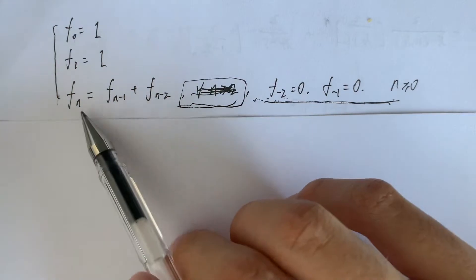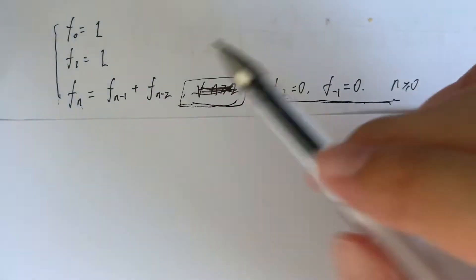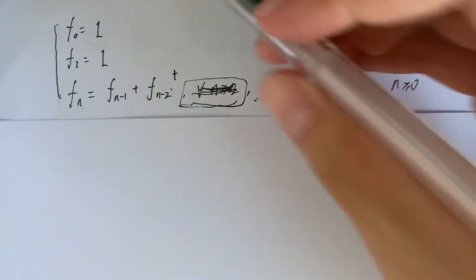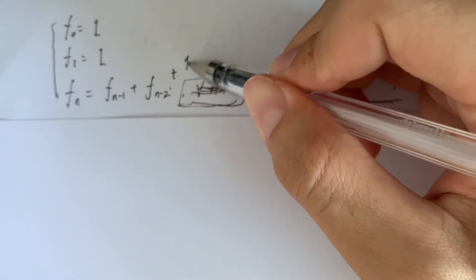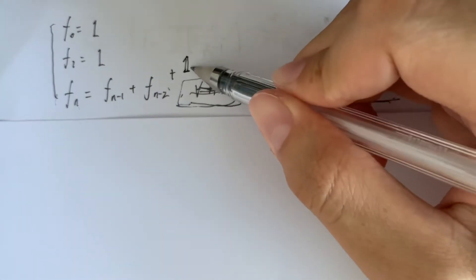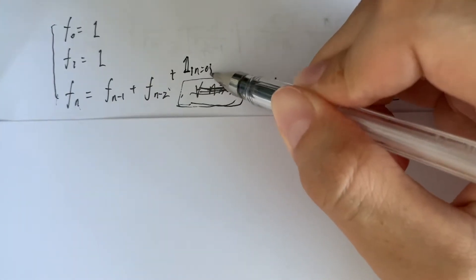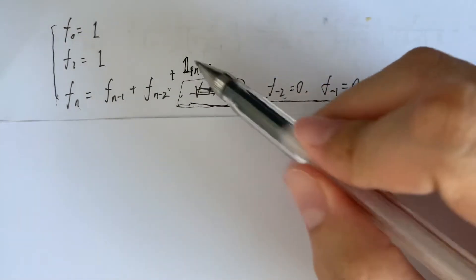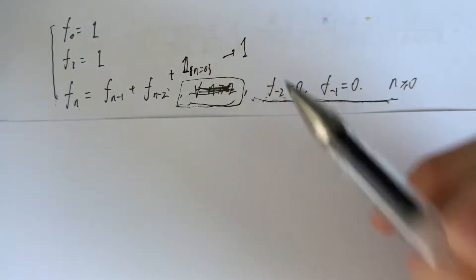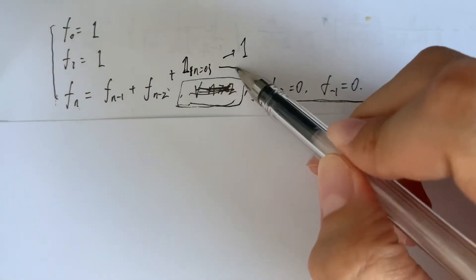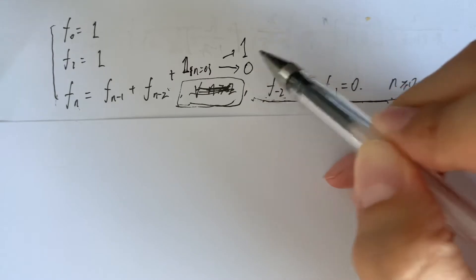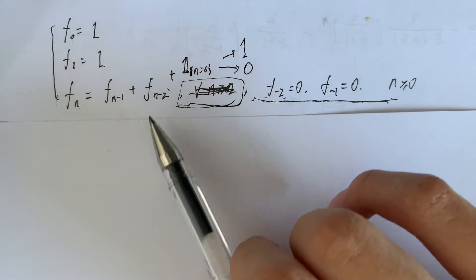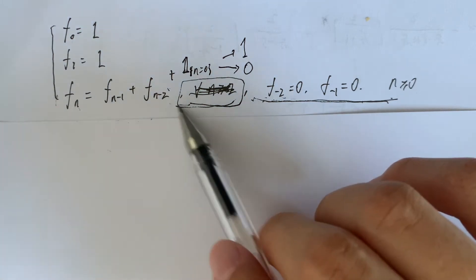To handle the case when n equals 0, we introduce an indicator function. This function equals 1 when n equals 0, and equals 0 when n is not equal to 0. We add this term so that the recurrence can be generalized to every n not smaller than 0.